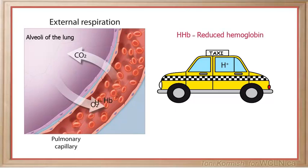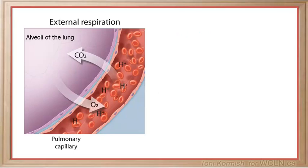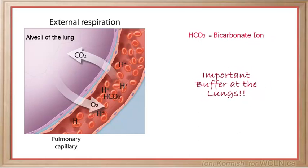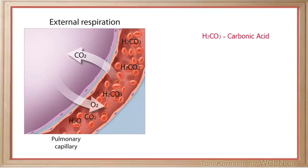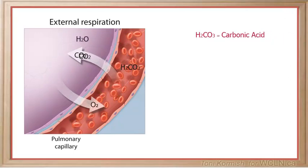If hydrogen ions continue to be released in the capillaries around the lungs, the tissue would become highly acidic. The hydrogen ions are buffered by a molecule called the bicarbonate ion. When hydrogen ions bind to the bicarbonate ion, a molecule called carbonic acid is temporarily formed. Carbonic acid quickly breaks down into carbon dioxide and water, both of which diffuse into the alveoli and are exhaled.